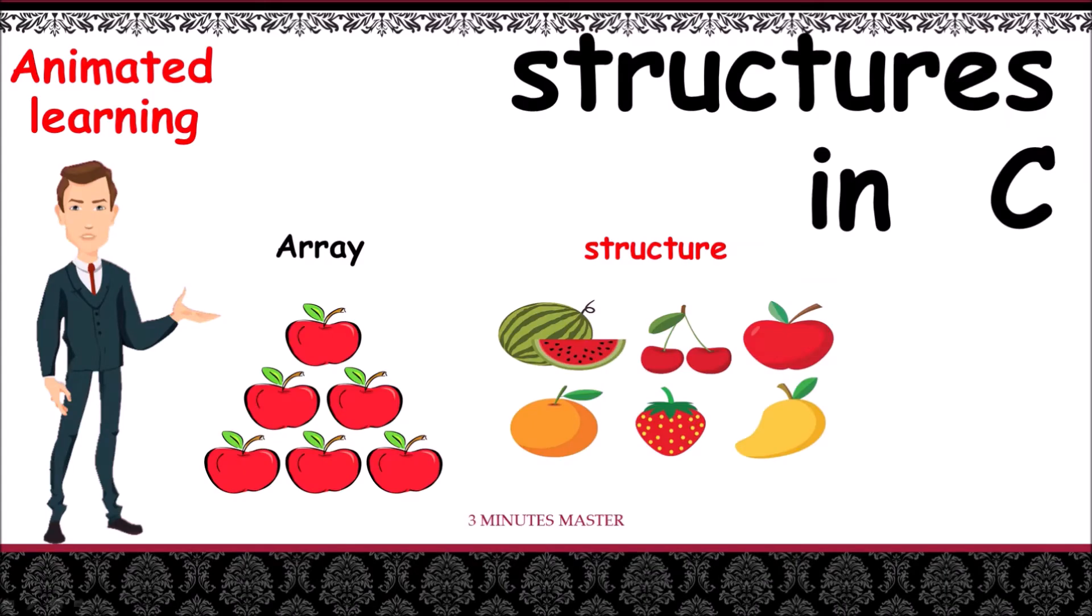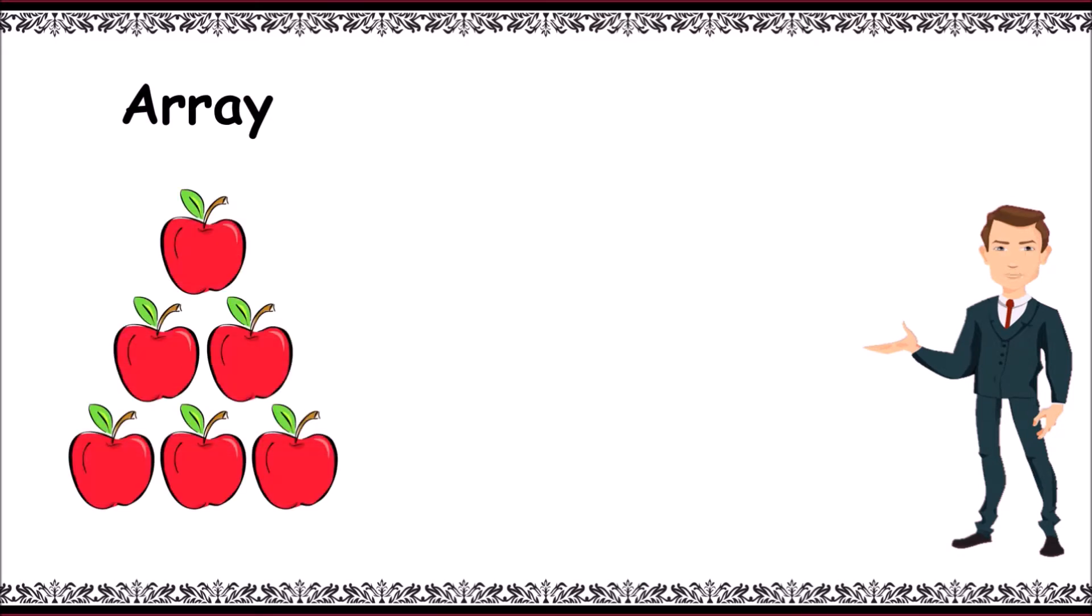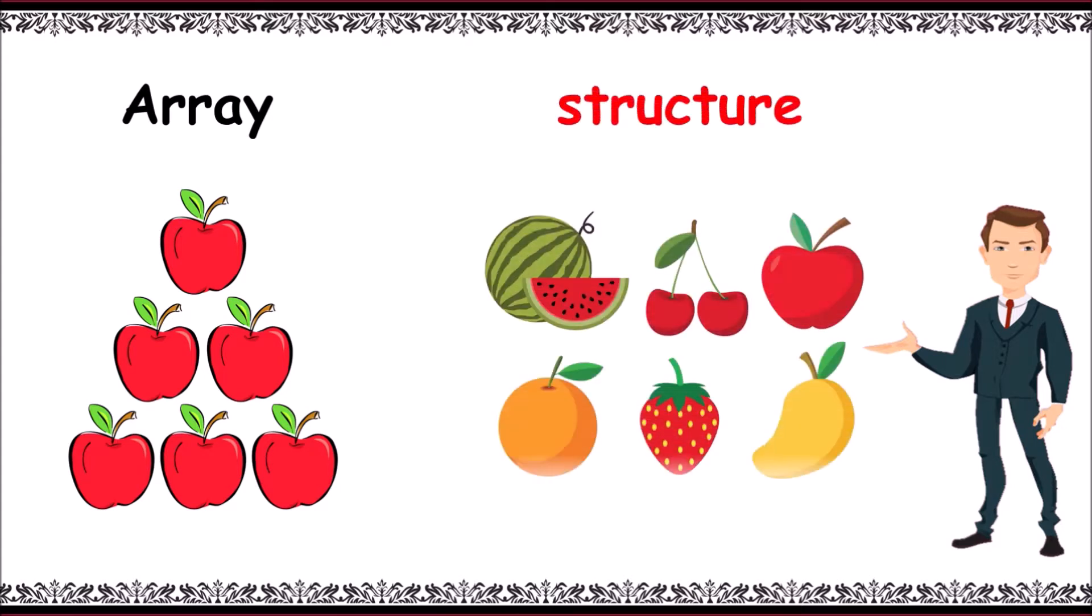Hello guys, welcome to 3MM. Let's learn about structures in C. Consider an array first - it has a collection of similar elements, like apples here. Whereas in structures, we have a collection of similar or dissimilar elements.